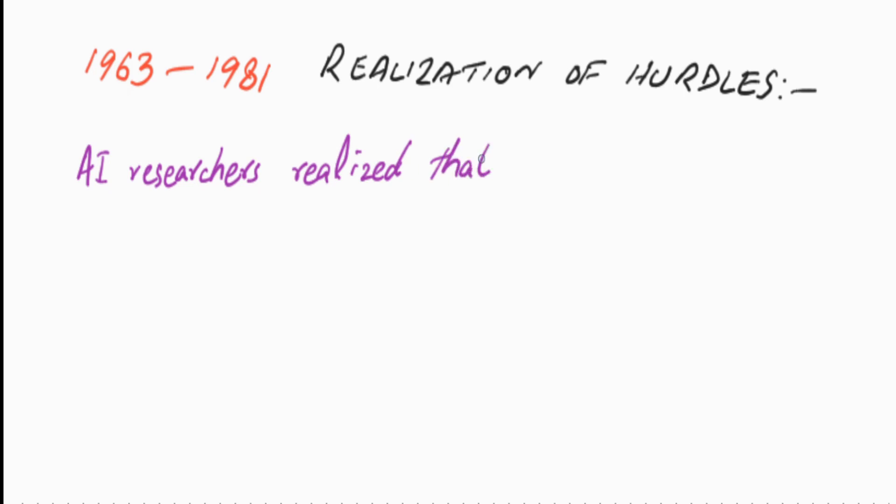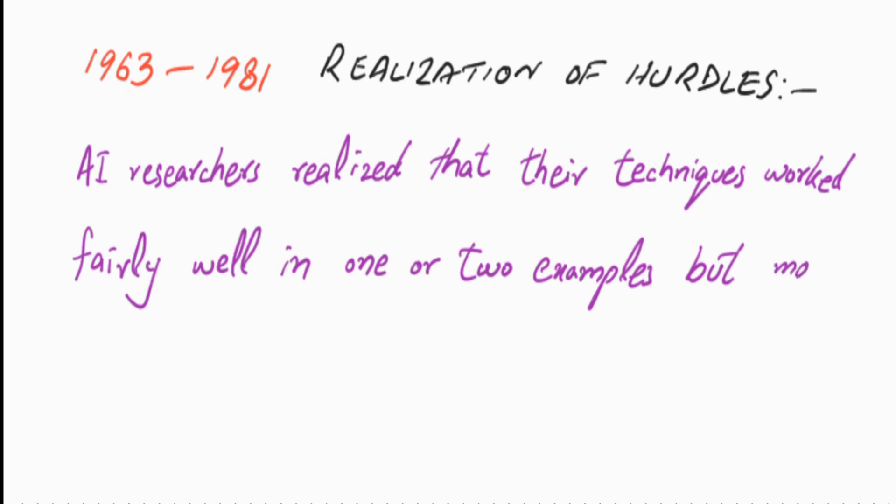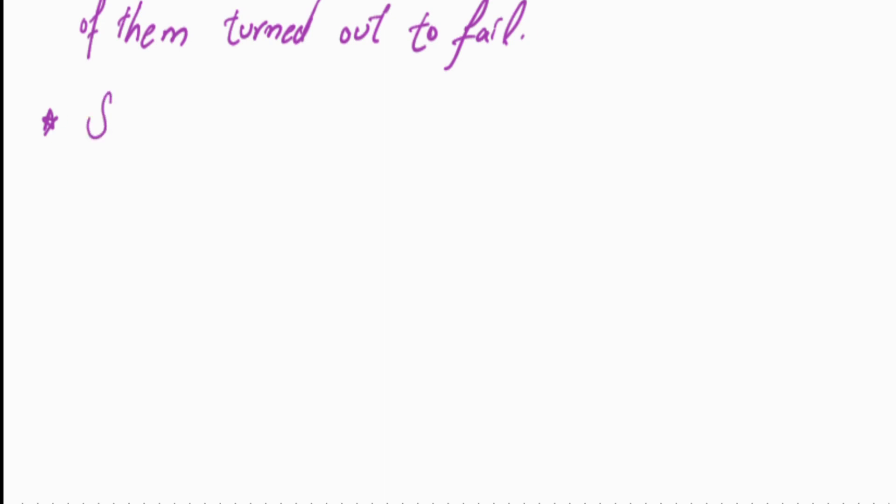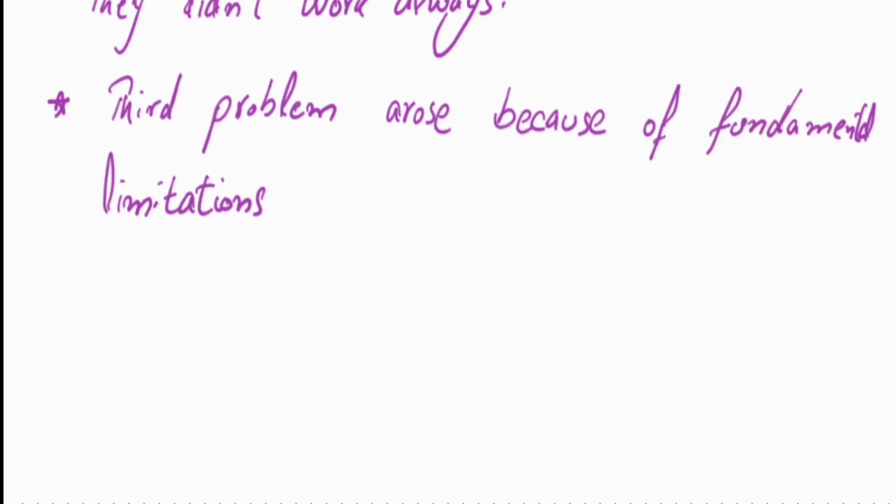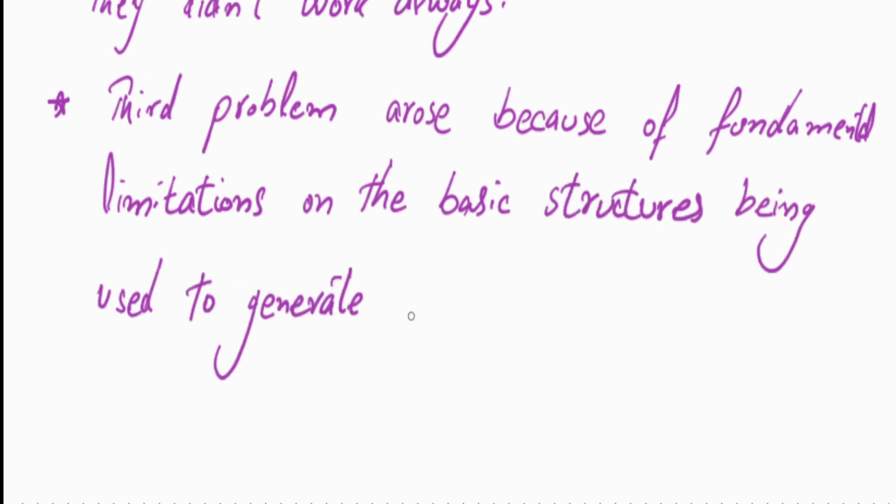They soon started to realize that though their techniques worked fairly well on one or two simple examples, most of them turned out to fail when tried on a wider selection of problems. The second kind of difficulty was that many problems AI was trying to solve were intractable. And the third problem arose because of fundamental limitations on the basic structures being used to generate intelligent behavior.